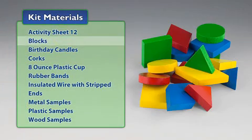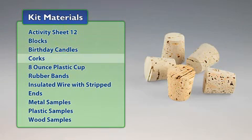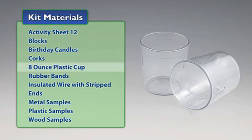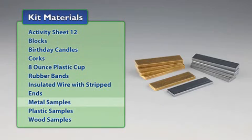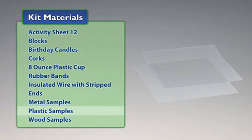You will need the following materials from your kit: Activity Sheet 12, blocks, birthday candles, corks, 8-ounce plastic cup, rubber bands, insulated wire with stripped ends, metal samples, plastic samples, wood samples, and sorting trays.